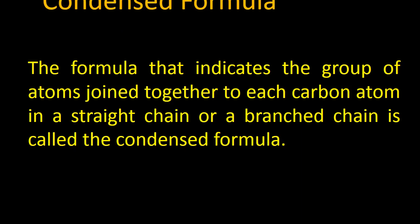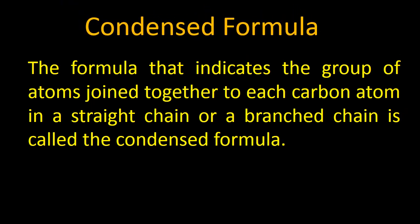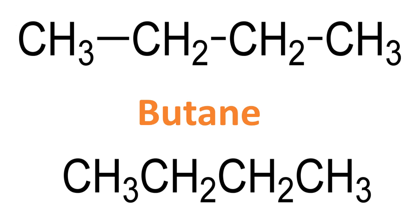Next is condensed formula. The condensed formula indicates the group of atoms joined together to each carbon atom in a straight chain or a branched chain. The word condensed means to make something short — the central atom is carbon, and how many atoms are attached to carbon is written in a short form. The number of carbon atoms and bonds are shown, but the hydrogen atoms are condensed and written in summed-up form, as shown in this example of the condensed formula of butane.